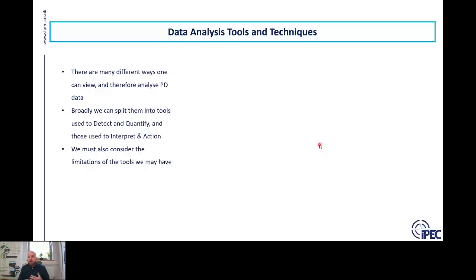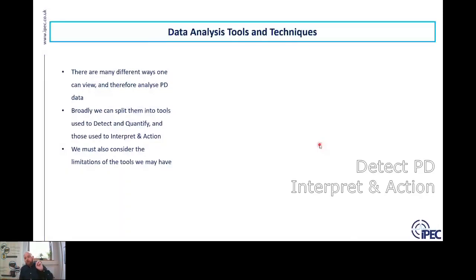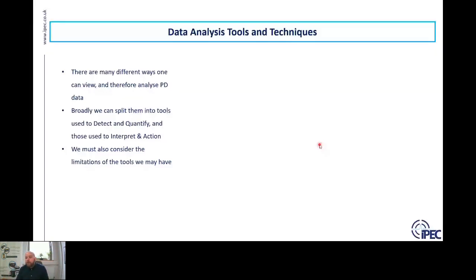There are many different ways to view and analyze PD data. I've split them into two broad categories: one is about the detection of PD, and the other is about the interpretation and action of PD. It's important to consider the limitations of the tools we have — not all tools will have all the different functions. You may need two or three different types of equipment to build a solid asset management program and follow through the steps to get useful action at the end.